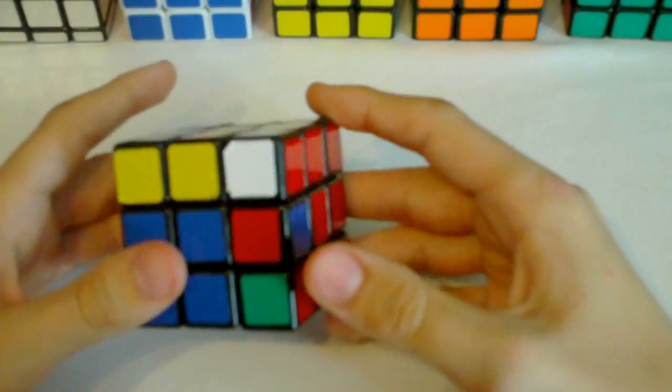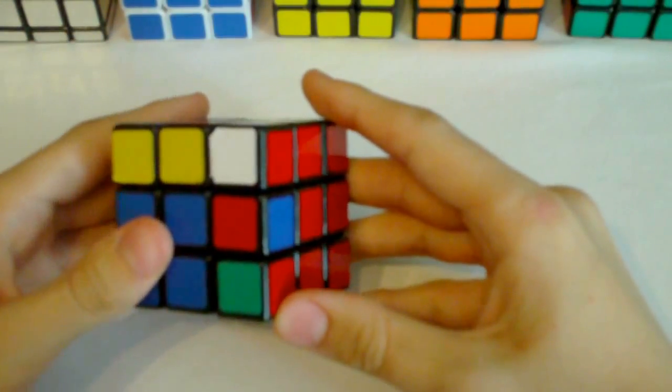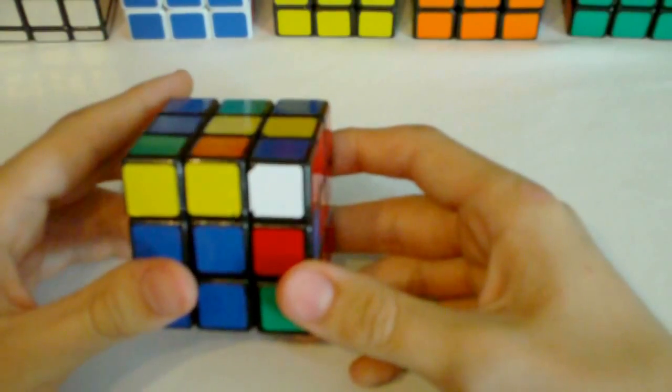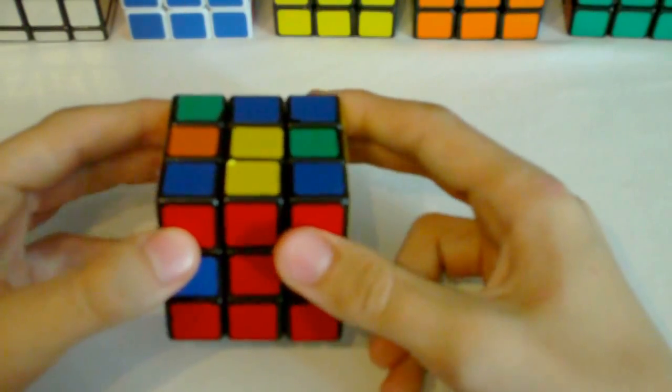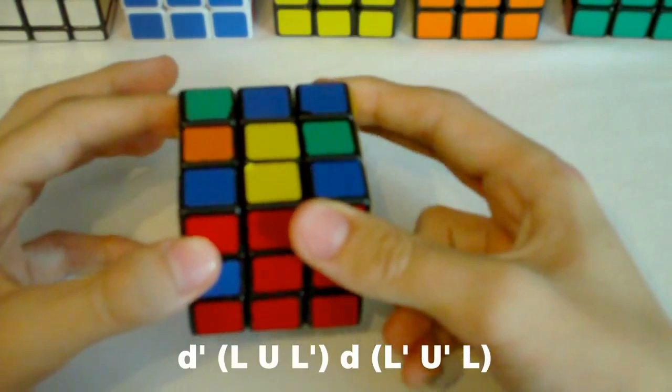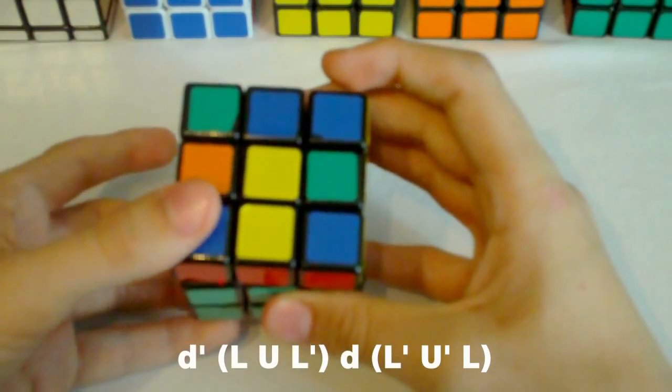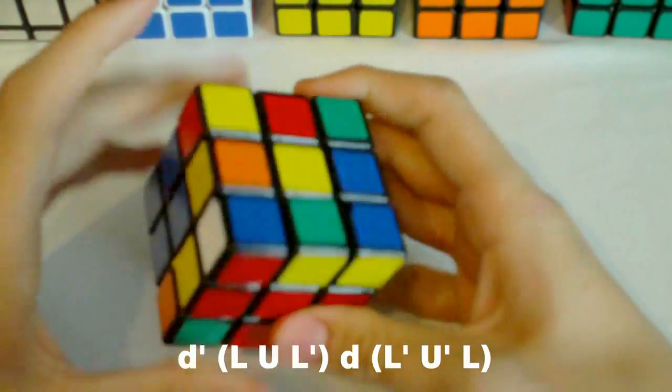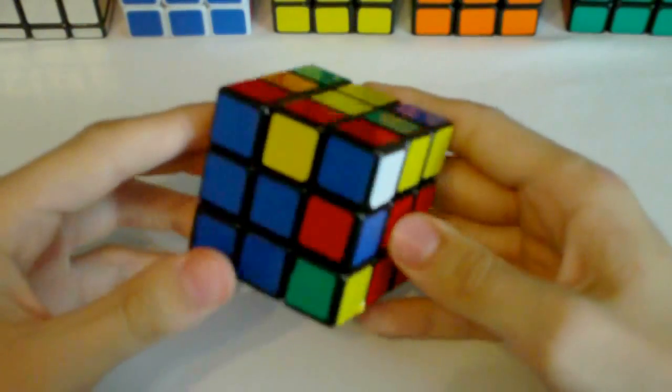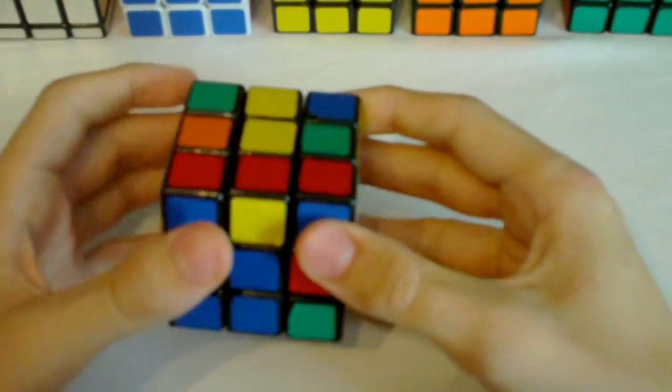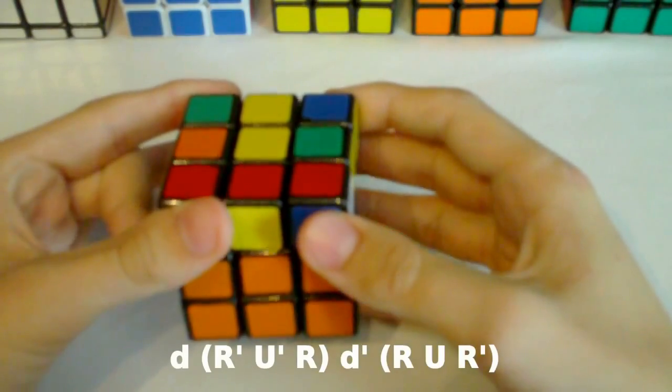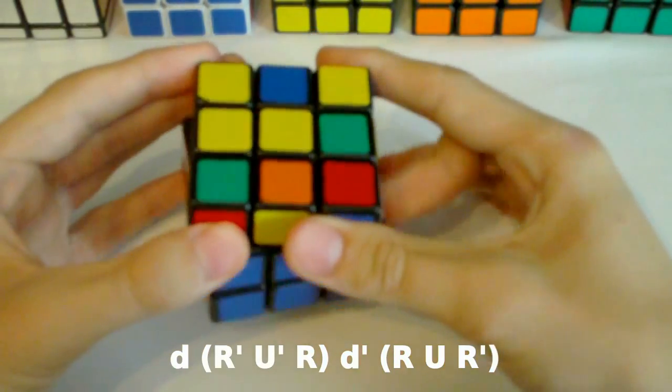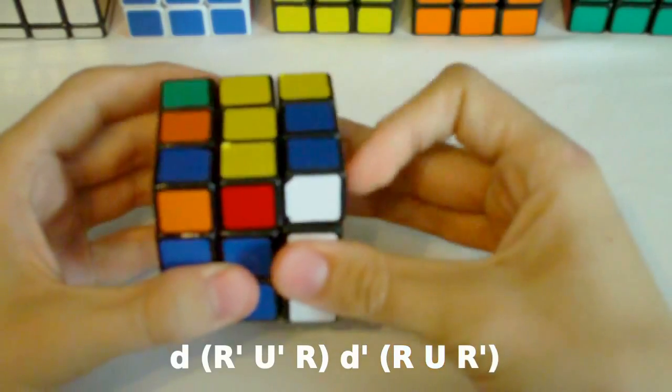Right, so these next two cases are the same as the last two cases, but this edge is flipped. So here's the first case, and in this case you hold the cube like this and then you do a lowercase d' and then l u l' lowercase d and then you just insert this with l' u' l. And then the mirror, you hold the cube like this and then you do a lowercase d r' u' r lowercase d' and then you just insert it so r u r'.